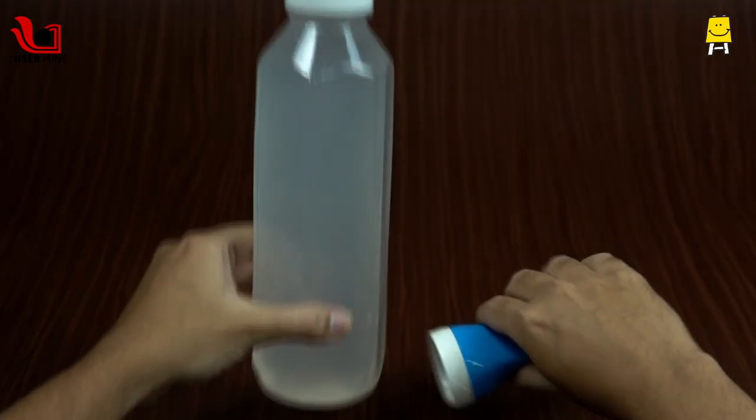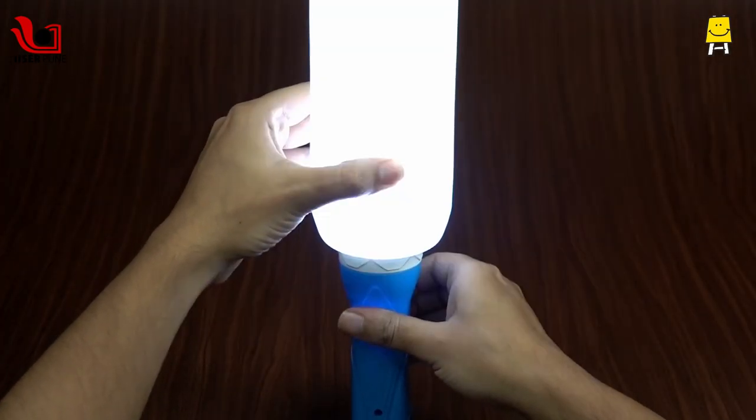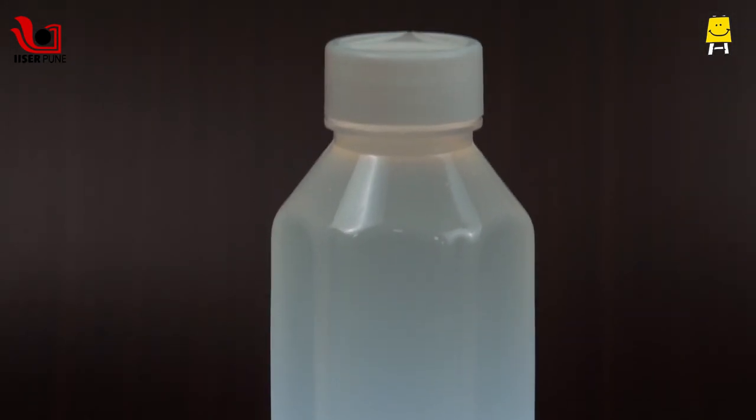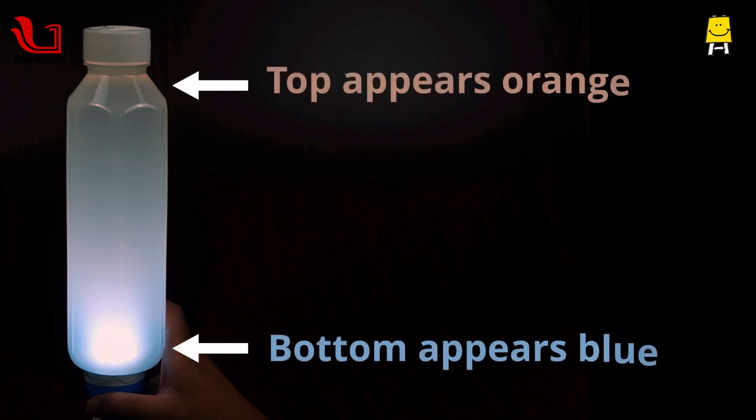Now hold a torch at the base of the bottle. You will notice that the base of the bottle appears blue, whereas the top appears orange.